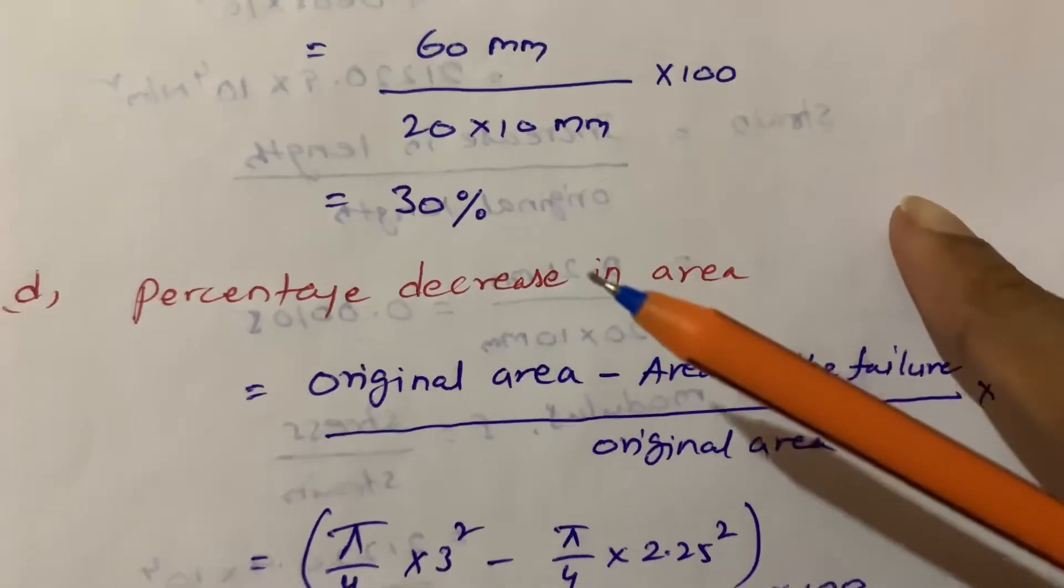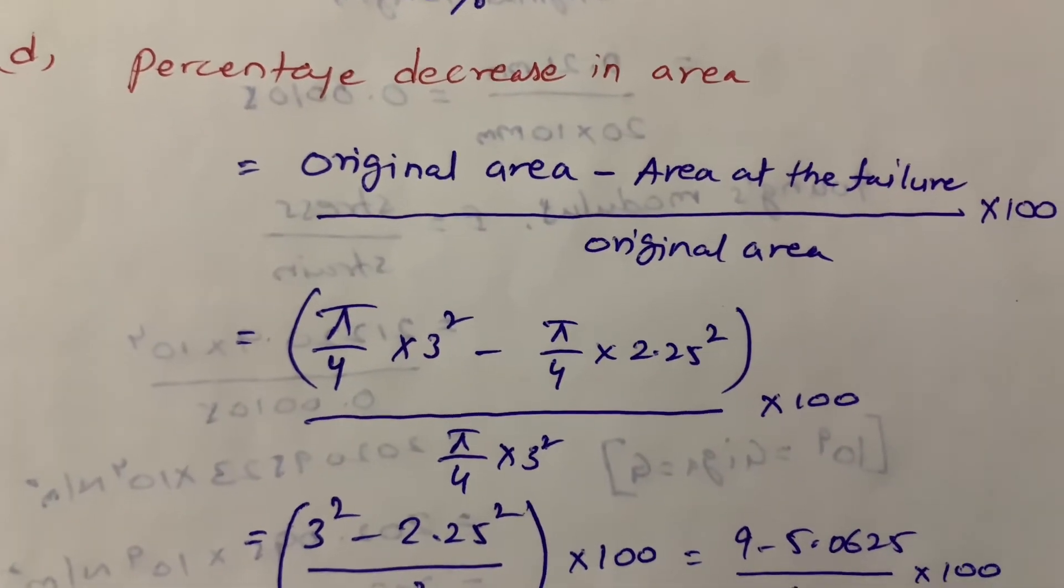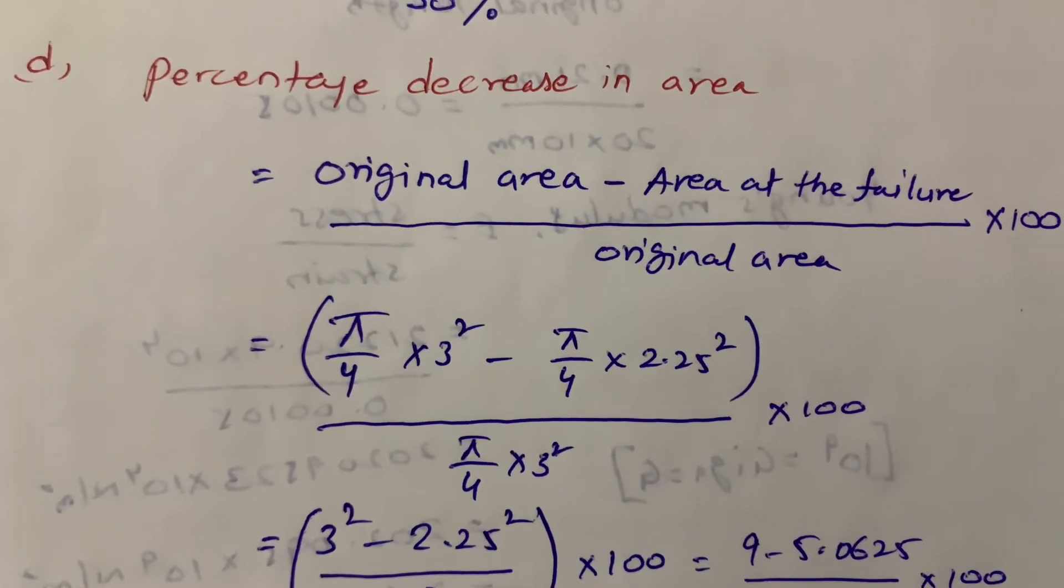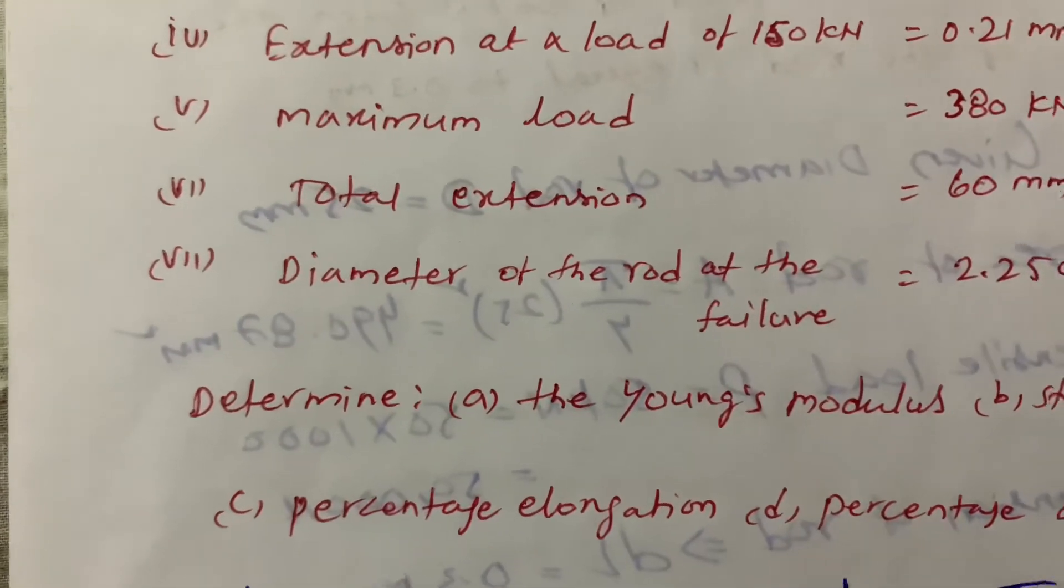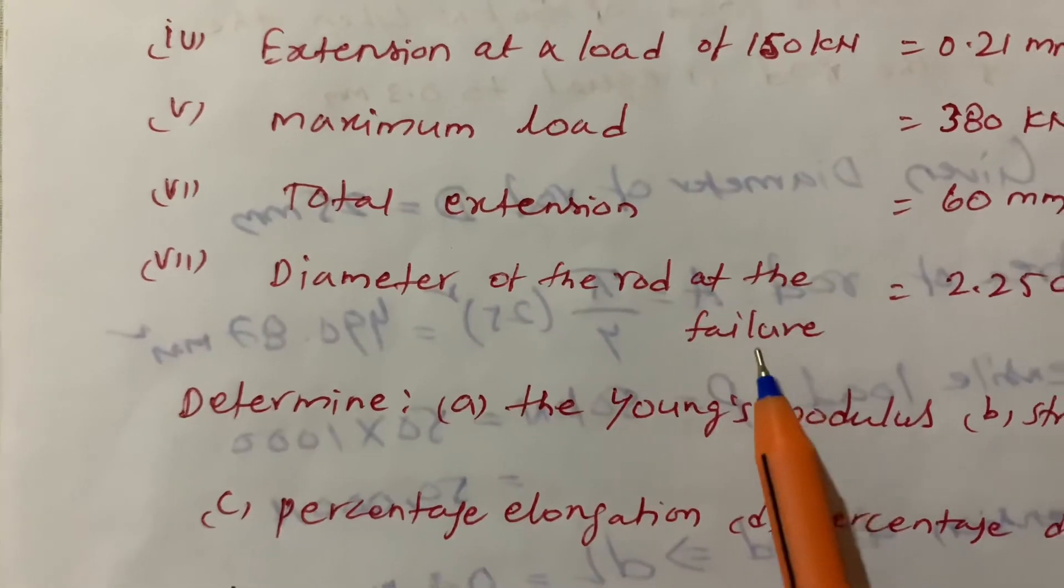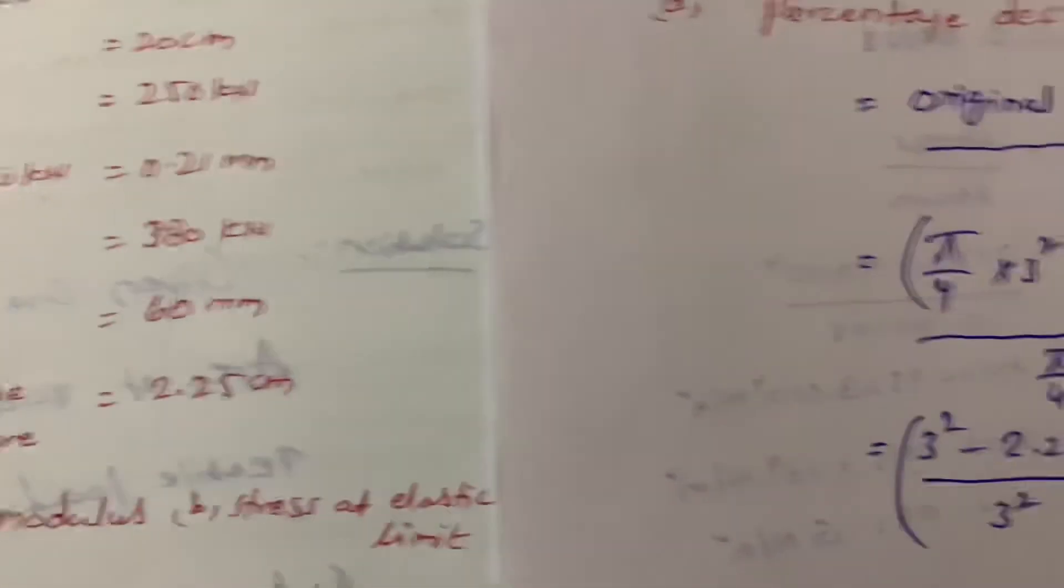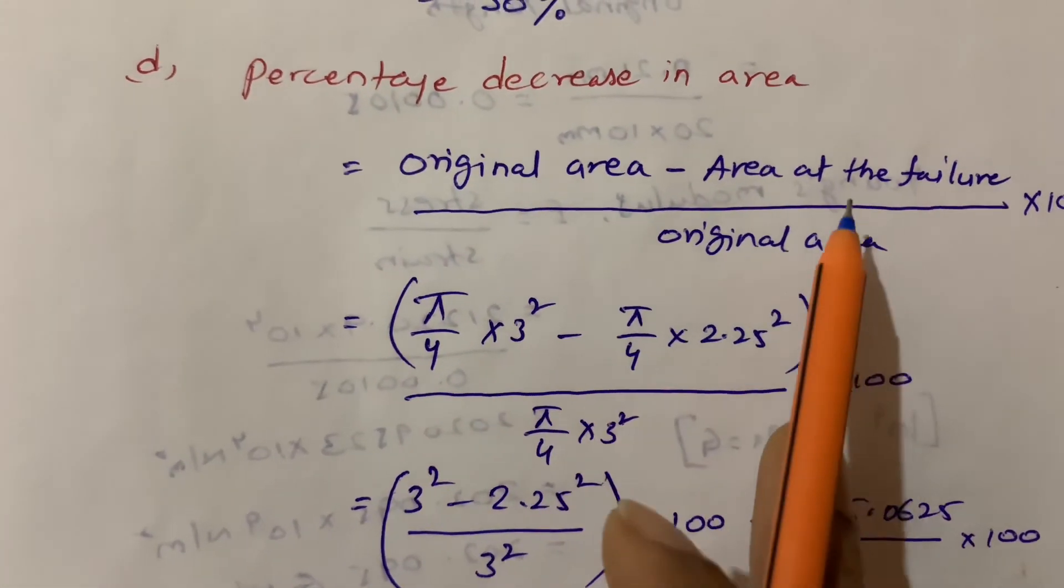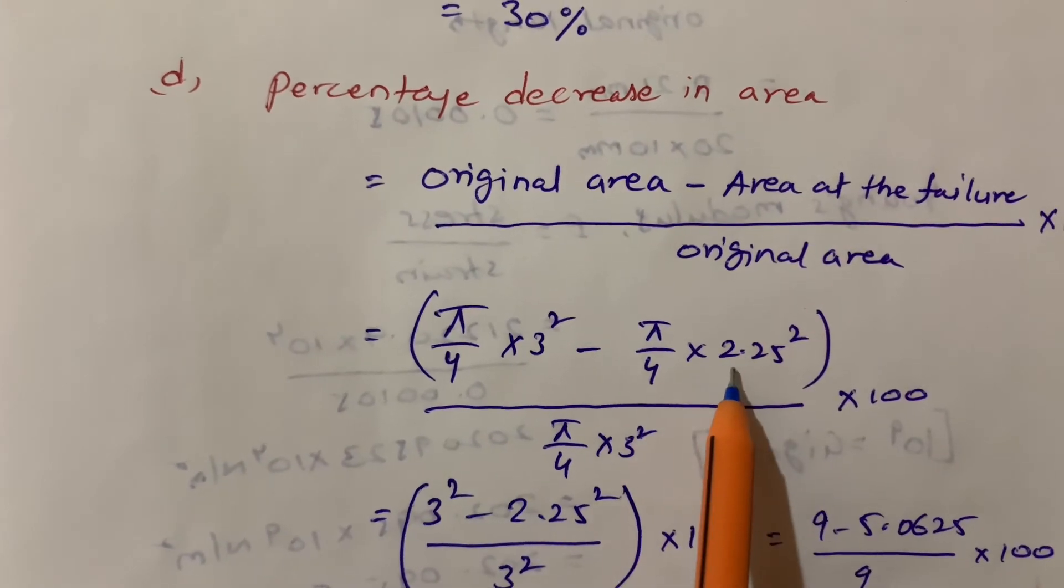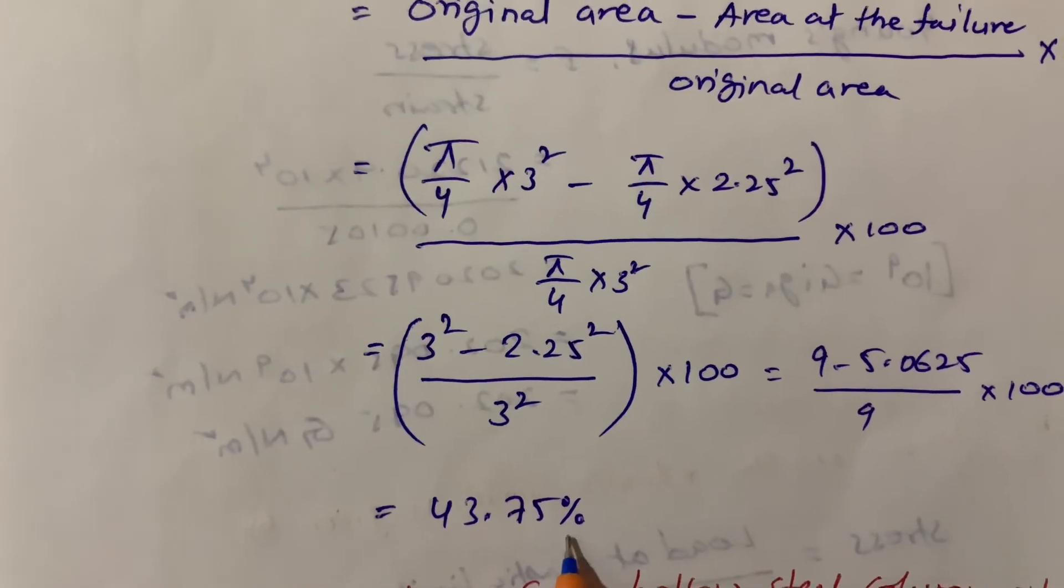Finally, percentage decrease in area. The formula is original area minus area at failure divided by original area times 100. Diameter of the rod at failure is 2.25 centimeters. So pi by 4 times 3 square minus pi by 4 times 2.25 square, divided by the original area times 100. I got 43.75 percent.